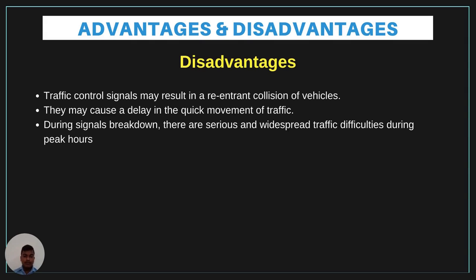Disadvantages. The disadvantages of the Smart Traffic Lighting System include: controlling signals may result in rear-end collisions of vehicles, causing delays. During signal breakdowns, serious and widespread traffic issues arise. In advanced technologies, a major disadvantage is hacking of the traffic light system, which can cause very heavy traffic on the streets. Therefore, cyber security is a main concern for the Smart Traffic Lighting System.